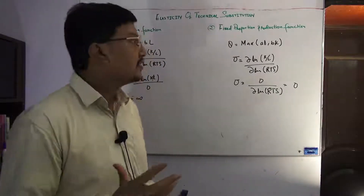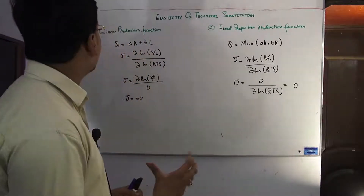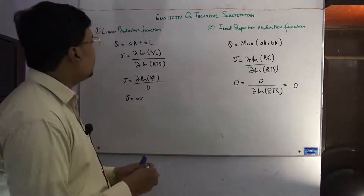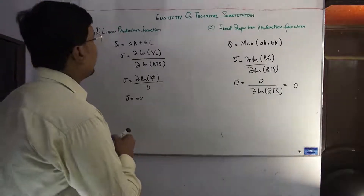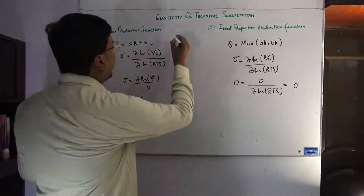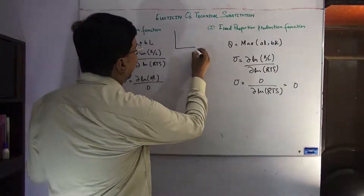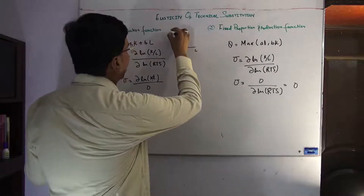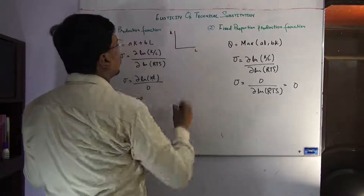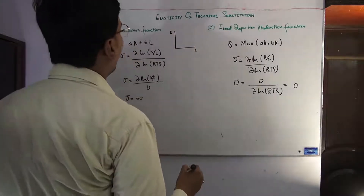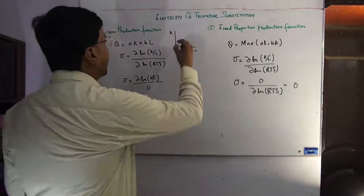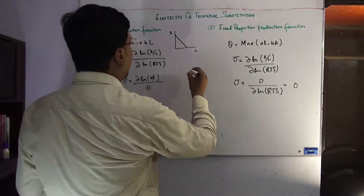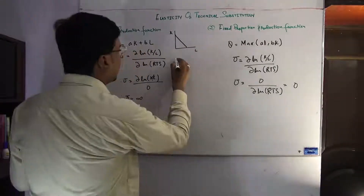We are discussing first of all the linear production function. If you talk about the linear production function and we take a two-good case with labor and capital, our isoquant will be a straight line.